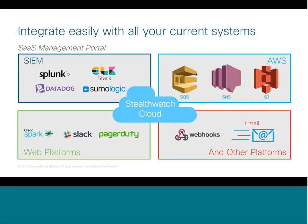Stealthwatch Cloud integrates with a lot of systems, including SIEM products. You can take the output from Stealthwatch Cloud and feed it to your SIEM, providing your analysts a way to focus attention on flagged potential problems. Instead of analysts trying to do everything manually, Stealthwatch Cloud does all the legwork and presents it on a plate. There are integration points with AWS — S3, SQS, SNS, which is great for Lambda functions. And for web platforms like WebEx Teams or Slack, PagerDuty, Stealthwatch Cloud can feed alerts to them as well, or even integrate with email.